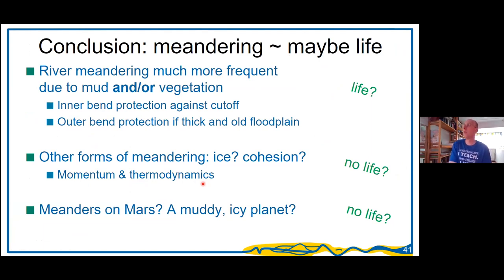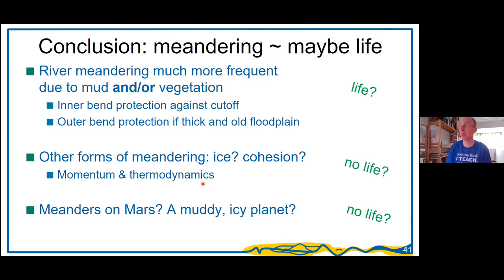I conclude and summarize. Meandering may indicate life, but it doesn't have to. River meandering on Earth certainly occurred much more frequently due to the presence of mud and/or vegetation — the two are correlated. There are two mechanisms at play: the inner bend can be protected against cut-off, and outer bend protection is also important if it's thick and old enough. But what about other sinuous forms that seem dynamic — meandering in ice, or with cohesive stuff, or under ice caps? It's mainly momentum and thermodynamics doing the job there, and we don't know nearly enough about that. It seems clear no life forms are involved. So the final question: are meanders on Mars indicative of life? They don't have to be — after all, Mars is a muddy and icy planet.